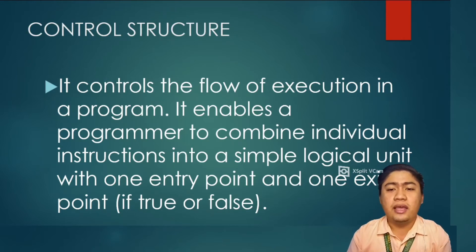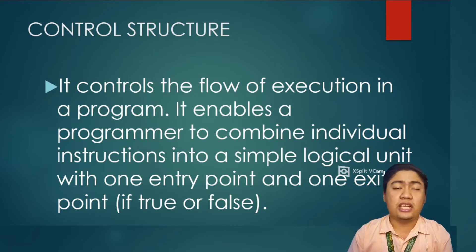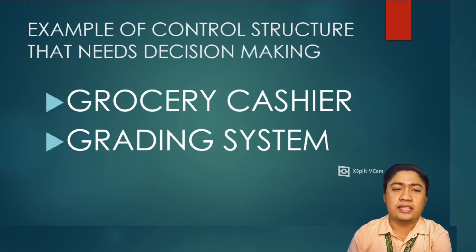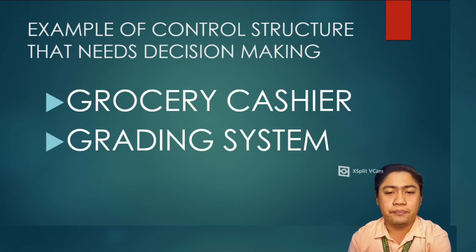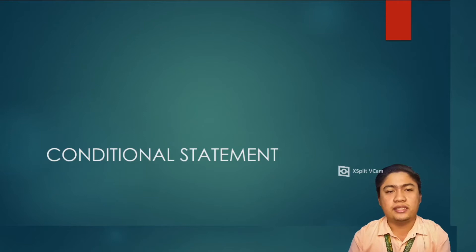A control structure is needed when a program encounters decision making or repetition of instructions. It enables a programmer to add a command of condition or repetition. Examples of control structures that involve decision making are the grocery cashier and the grading system. Now let's look at the conditional statement — what is a conditional statement?